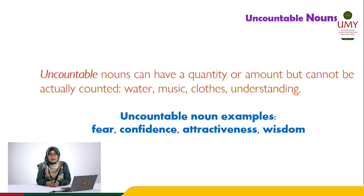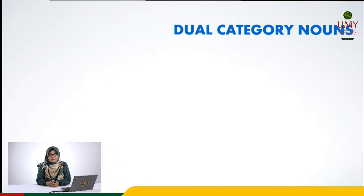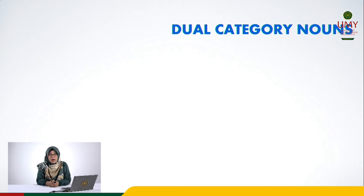On the other hand, uncountable nouns can have a quantity or amount but cannot actually be counted. For example: water, music, clothes, understanding, and so on. Uncountable noun examples such as fear, confidence, attractiveness, and wisdom sometimes cannot be seen, but you can feel them. Some nouns have a dual category — meaning some nouns may be countable or uncountable depending on how we use them.